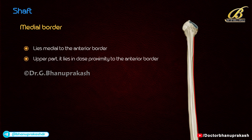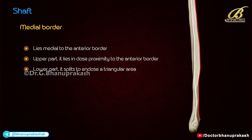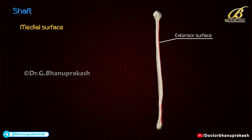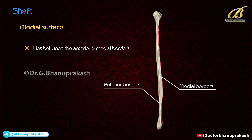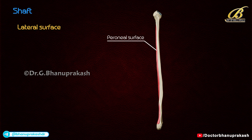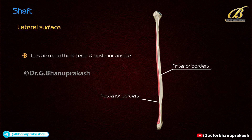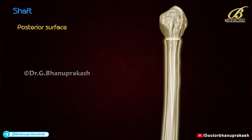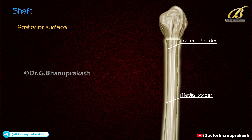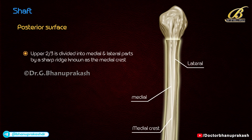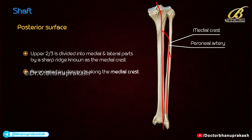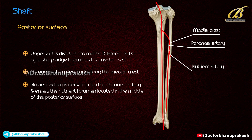The medial border, also known as the interosseous border, lies medial to the anterior border in its upper part and in close proximity to the anterior border in its lower part, where it splits to enclose a triangular area. The medial surface, also known as the extensor surface, lies between the anterior and medial borders. The lateral surface, also known as the peroneal surface, lies between the anterior and posterior borders. The posterior surface, also known as the flexor surface, lies between the medial and posterior borders; its upper two-thirds is divided into medial and lateral parts by a sharp ridge known as the medial crest. The peroneal artery descends along the medial crest.